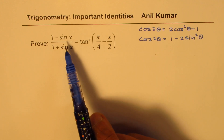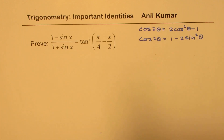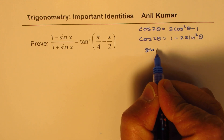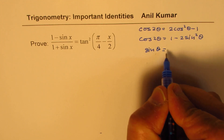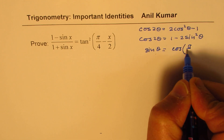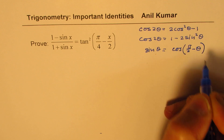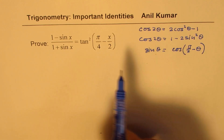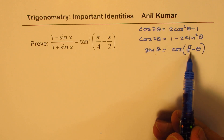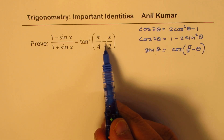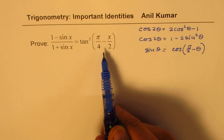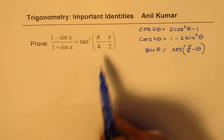How do we get cos θ when we are working with sin? Well, if we have sin θ, we could always write this as cos of pi by 2 minus θ. This concept helps us link pi by 4, and the half angle of that gives us the clue that these are the formulas to be utilized for proving this identity.